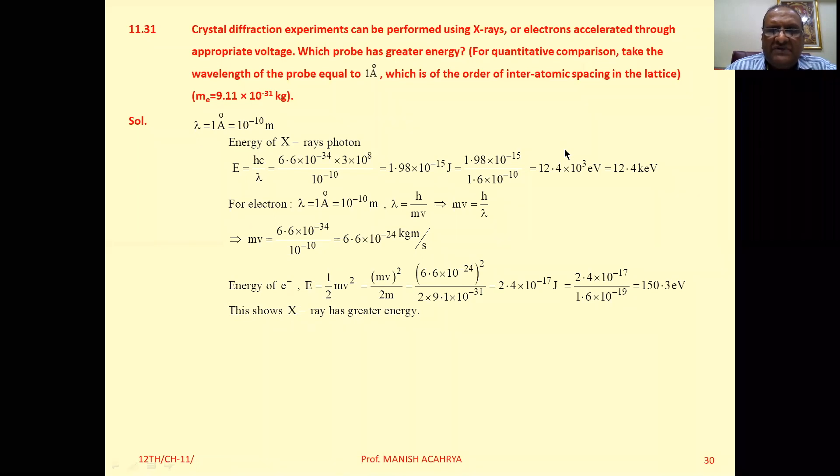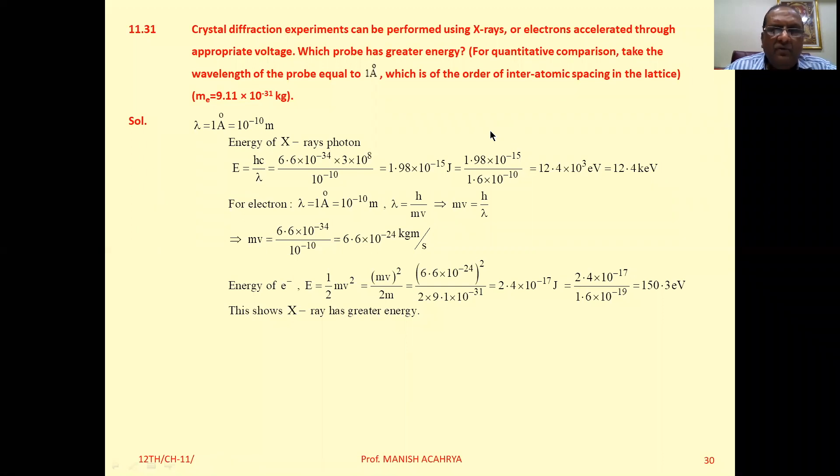Mass of electron is given to you. Now lambda, that is 1 angstrom, means 10 raised to minus 10 meter. So energy of X-rays photons, that is equal to hc upon lambda.